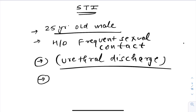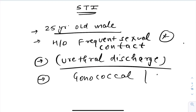The catch point here is frequent sexual contact with commercial sex workers — he got an STD. The condition is urethritis leading to urethral discharge. Urethritis is of two types: gonococcal and non-gonococcal urethritis (NGU). Gonococcal is caused by gram-negative cocci; for NGU, the most common cause is Chlamydia trachomatis.